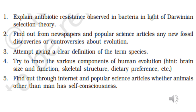Dietary preferences: Dryopithecus were herbivorous, Ramapithecus herbivorous, Australopithecus were carnivorous, Homo habilis carnivorous. Homo erectus and Homo sapiens are omnivorous. So these are the different brain sizes, skeletal structures, and dietary preferences of different categories in the tree of evolution of man.